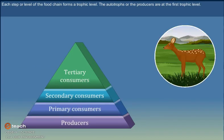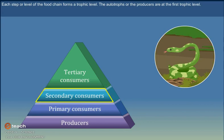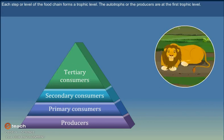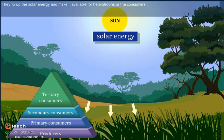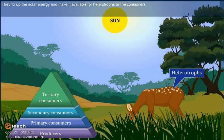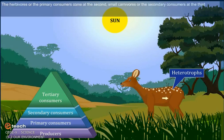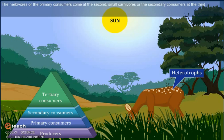The autotrophs or the producers are at the first trophic level. They fix up the solar energy and make it available for heterotrophs or the consumers. The herbivores or the primary consumers come at the second. Small carnivores or the secondary consumers at the third.